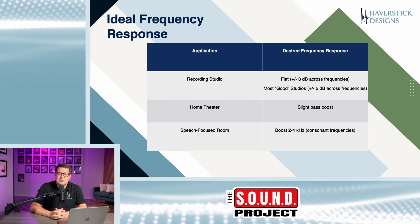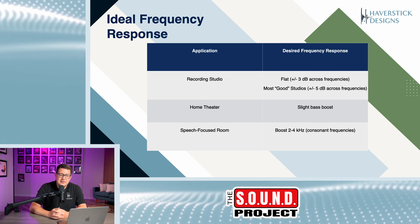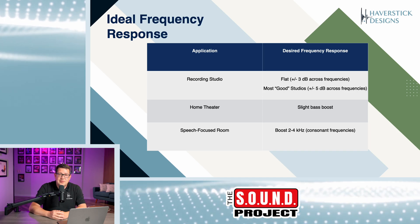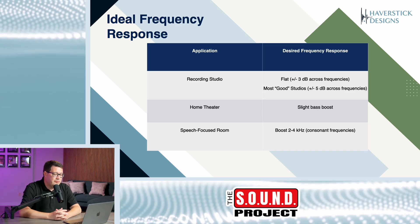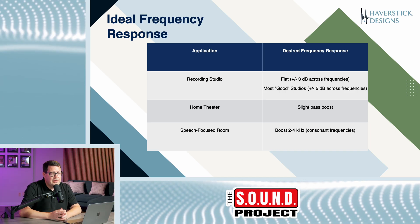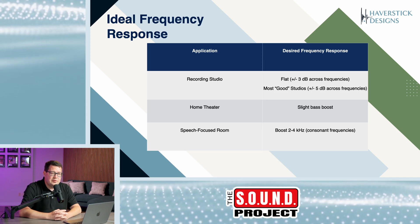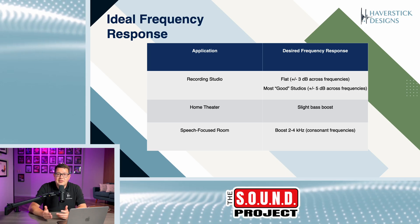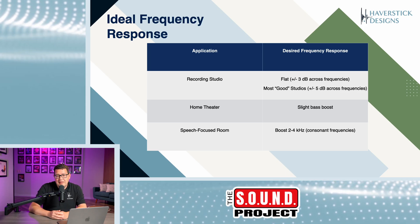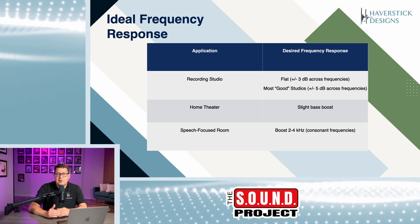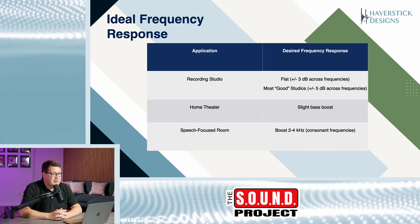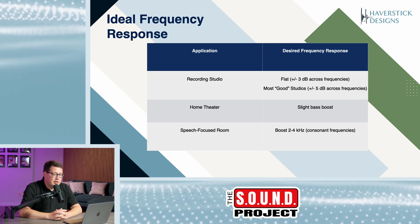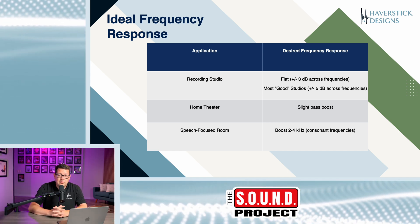What's an ideal frequency response? That's a hard question to answer because there are a lot of different answers and it's somewhat subjective. For a recording studio, plus or minus 3 decibels across the frequency spectrum is considered really great. If you can get it plus or minus 5 decibels, then you're doing really good. That means from the lowest dip to the highest peak, you're at about 10 decibels of difference if it's plus or minus 5, or 6 decibels of difference if it's plus or minus 3. Typically that 3 to 5 range is what we're shooting for.